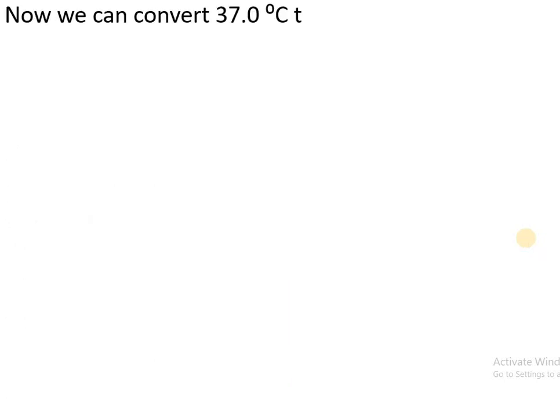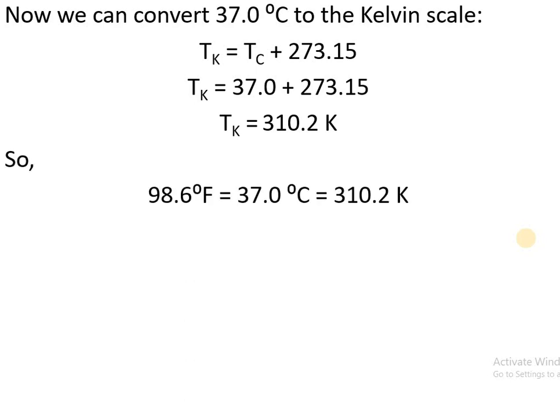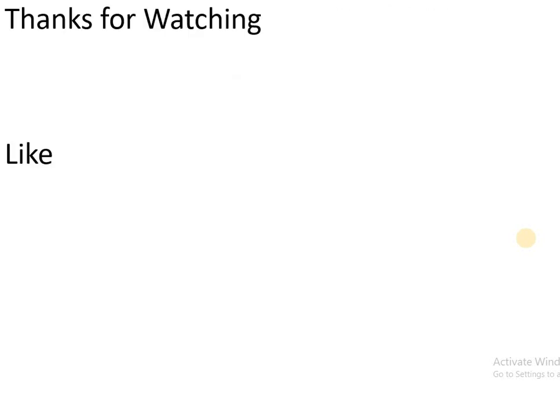We can now convert 37 degree Celsius to the Kelvin scale using the equation Tk = Tc + 273.15, giving Tk = 310.2 Kelvin. Finally, 98.6 degree Fahrenheit equals 37.0 degree Celsius, which equals 310.2 Kelvin. Thanks for watching.